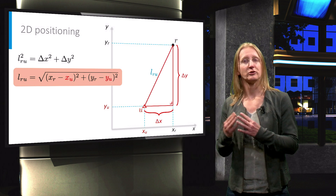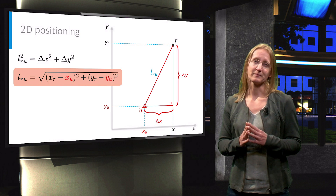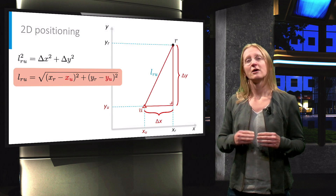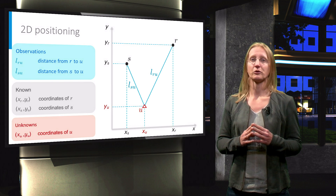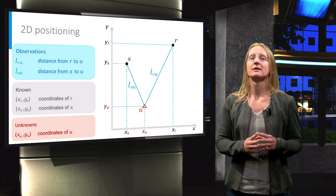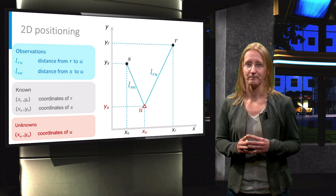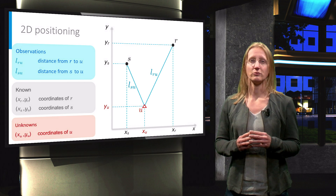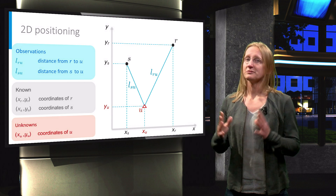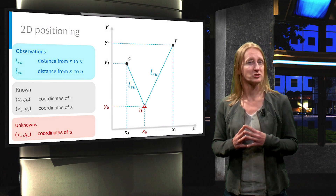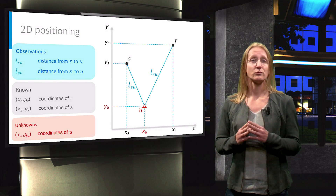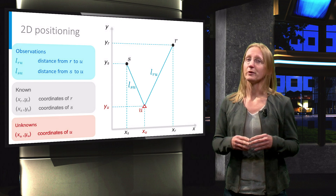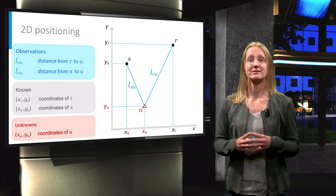Having one observation and two unknowns does not allow to get a solution for the position, of course. Therefore we need to observe the distance to more points with known coordinates. For instance, we added a second point s with known coordinates and can similarly set up the observation equation for this new distance observation. Now we have two observations, four known coordinates, and two unknown coordinates. Note that this example is in fact based on the same principle as positioning with GPS, where r and s would represent GPS satellites with known coordinates. A big difference is that with GPS we are working in three-dimensional space, so the z-coordinates would enter the problem.